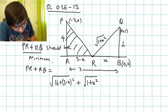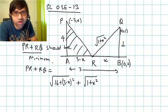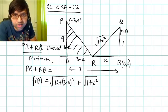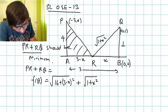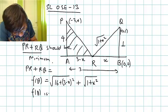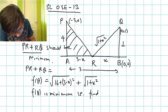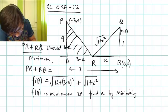So this is the length PR plus RQ, and it is changing because there is an x variable. Let's assume this is a function θ. Now we have to find the x position of R, that is we have to find x such that f(θ) is minimum - finding the minimum value of f(θ) by minimizing f(θ).